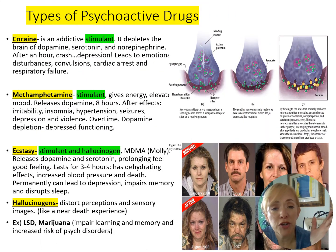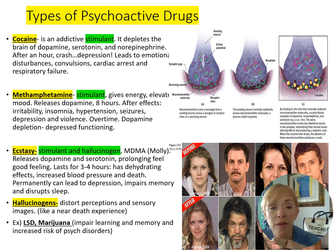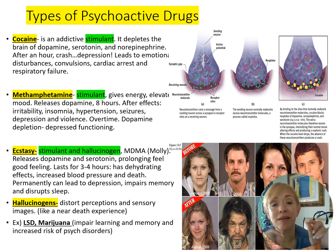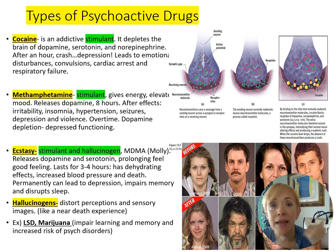Cocaine is a stimulant, methamphetamine is also a stimulant, ecstasy is both a stimulant and a hallucinogen. Examples of hallucinogens include LSD and marijuana.